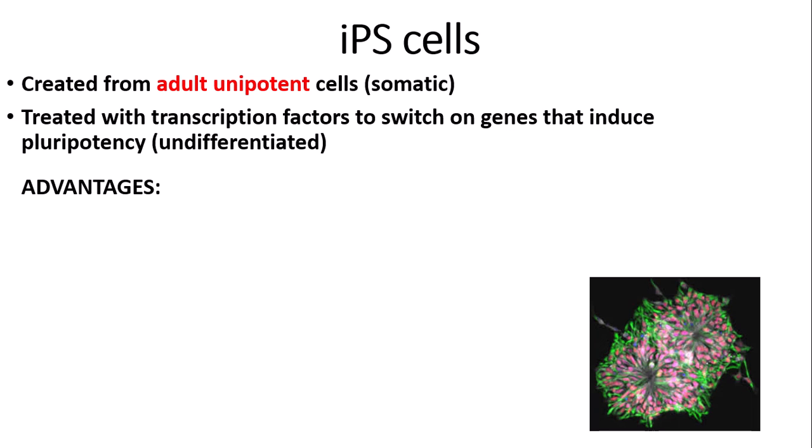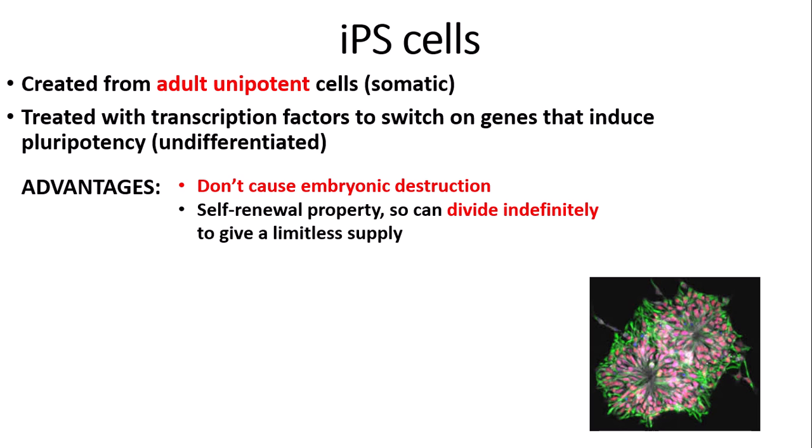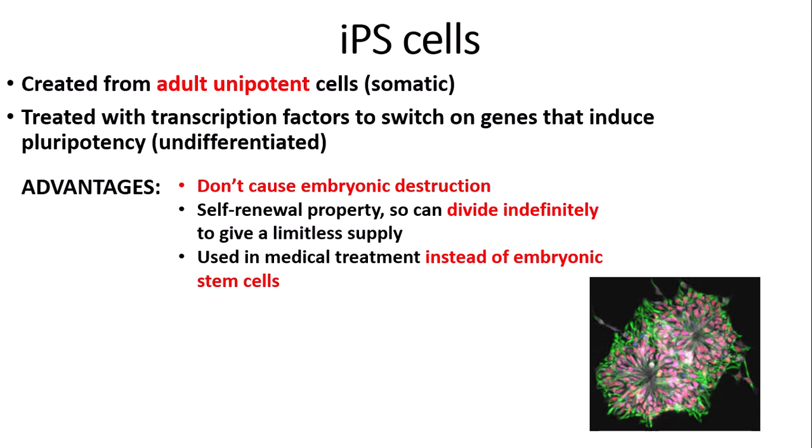IPS cells have many advantages compared with other types of stem cells. The main one is that they eliminate many ethical problems because IPS cells don't cause embryonic destruction — they are produced from adult cells. IPS cells also have a property called self-renewal, meaning they can divide indefinitely to give a limitless supply, and they can be used in medical treatment instead of embryonic stem cells, again removing ethical issues.